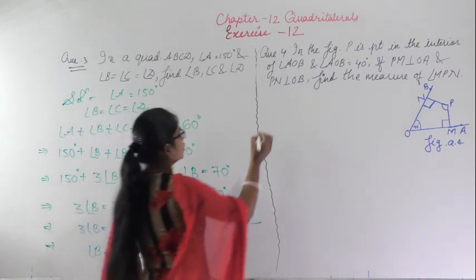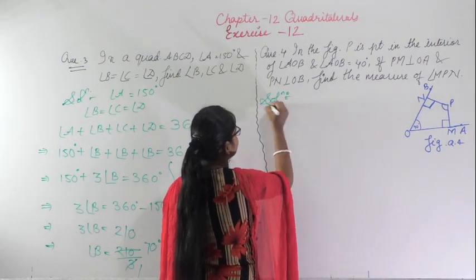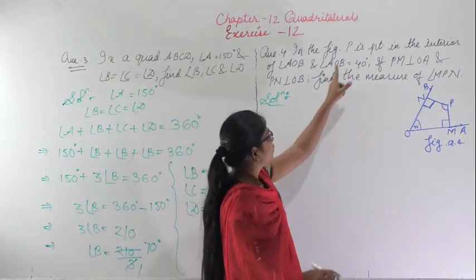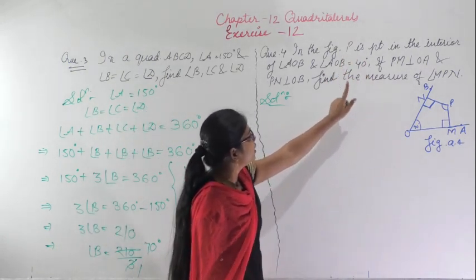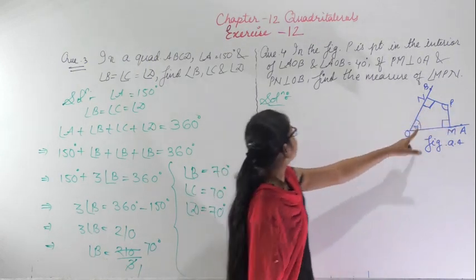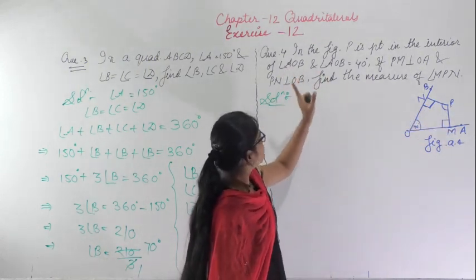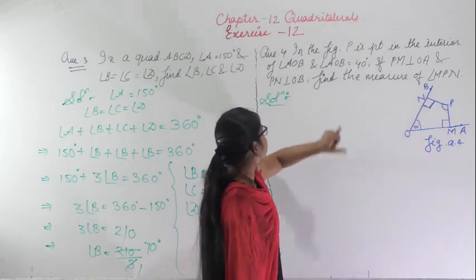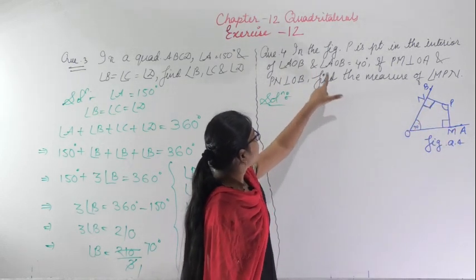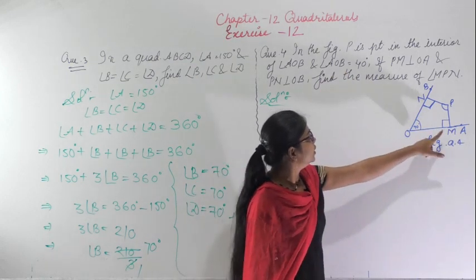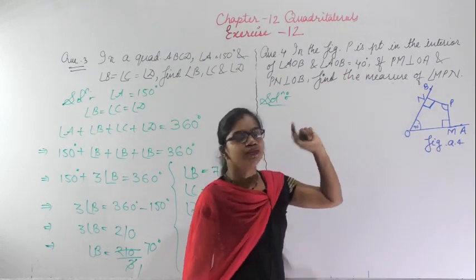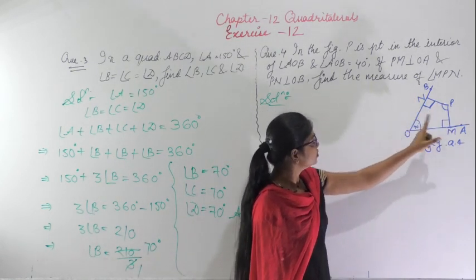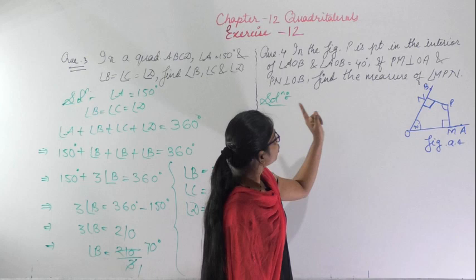Now for question 4. We are given an adjoining figure where P is a point in the interior of angle AOB. Angle AOB is given as 40 degrees. PM is perpendicular to OA and PN is perpendicular to OB.